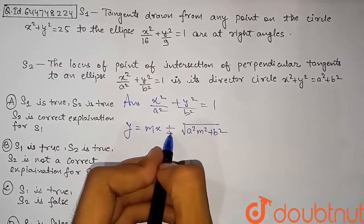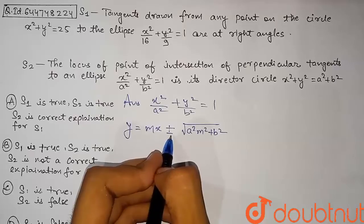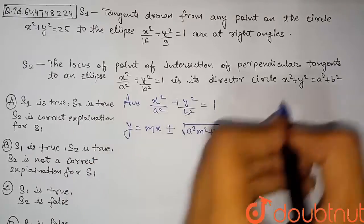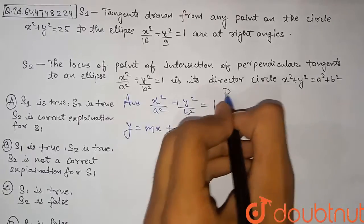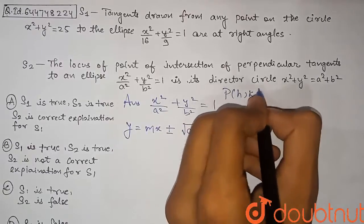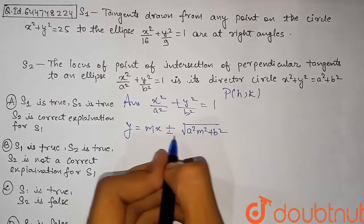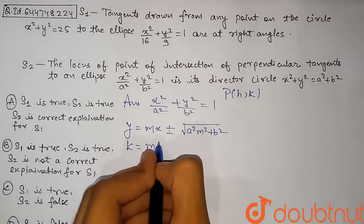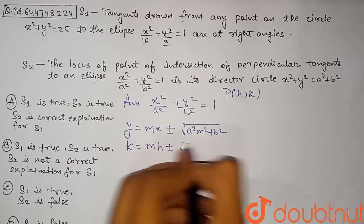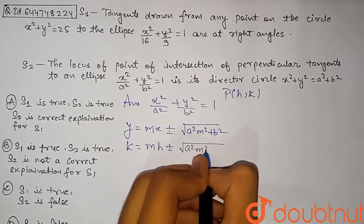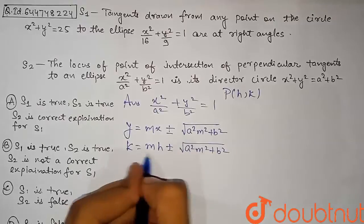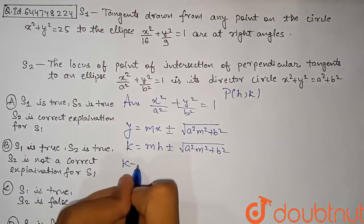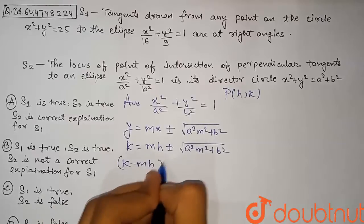We can assume the point of intersection of the two tangents to be (h, k). Since (h, k) lies on the tangent, it must satisfy the equation, giving us: k = mh ± √(a²m² + b²). Taking the mh term to one side and squaring both sides, we get: (k − mh)² = a²m² + b².